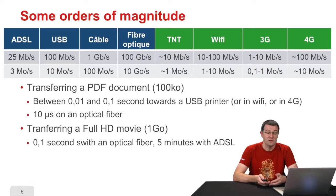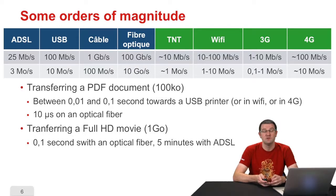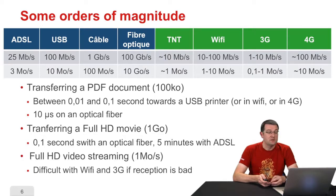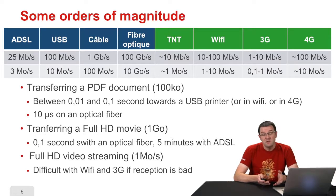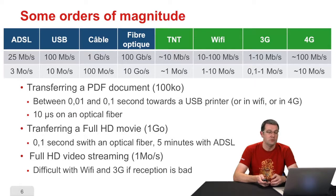Now let's take another document — a full HD movie, for example, a few gigabytes. On an optical fiber, that can take a second or a tenth of a second depending on the fiber's quality. With ADSL, on the other hand, the transfer will take several minutes — so it begins to show that it is less instantaneous. For a more average use, like full HD video streaming at about one megabyte per second: with ADSL, if the connection is good, it should work. With a Wi-Fi or 3G network, it can get complicated except if reception is very good — if you are standing very close to the transmitter. So it will depend on conditions, but it could be complicated to watch high-quality videos on that type of connection.